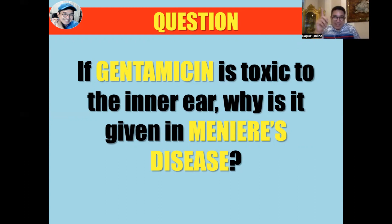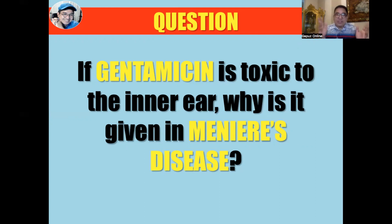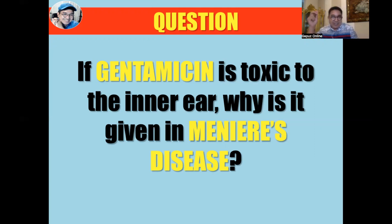Now here is the thing we need to clarify. Gentamicin is an aminoglycoside that causes two significant adverse reactions. First is nephrotoxicity — we check BUN, creatinine, and monitor for oliguria. The good thing about the nephrotoxic condition caused by gentamicin is that it is reversible. On the other hand, the ototoxic condition that could result is irreversible.